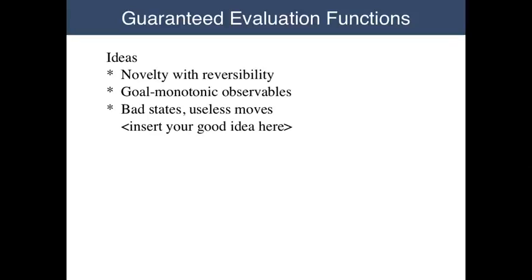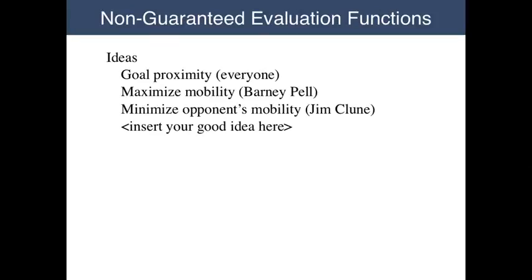Suppose, for example, the player were in a cave trying to get out. If it saw a brighter light in one tunnel than another, it might go for the brighter light. Finally, there are some states that can be determined to be bad even if other states are not known to be good. A silly example: stepping off the roof of a tall building is probably not a great way to get to the store. Another possibility is to use non-guaranteed evaluation functions, sometimes called heuristics. A number of such heuristics have been proposed over the years.